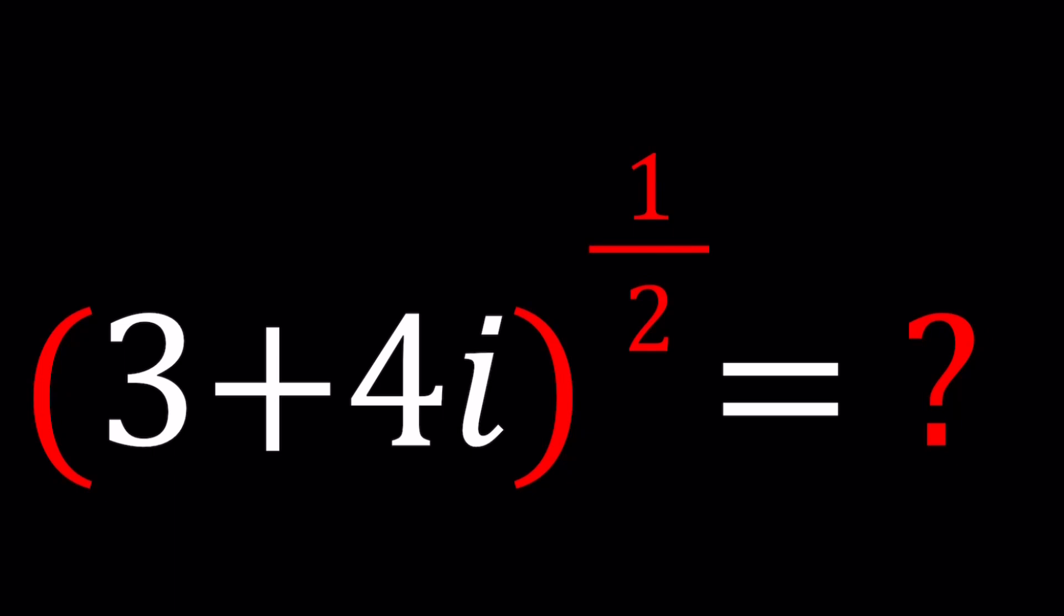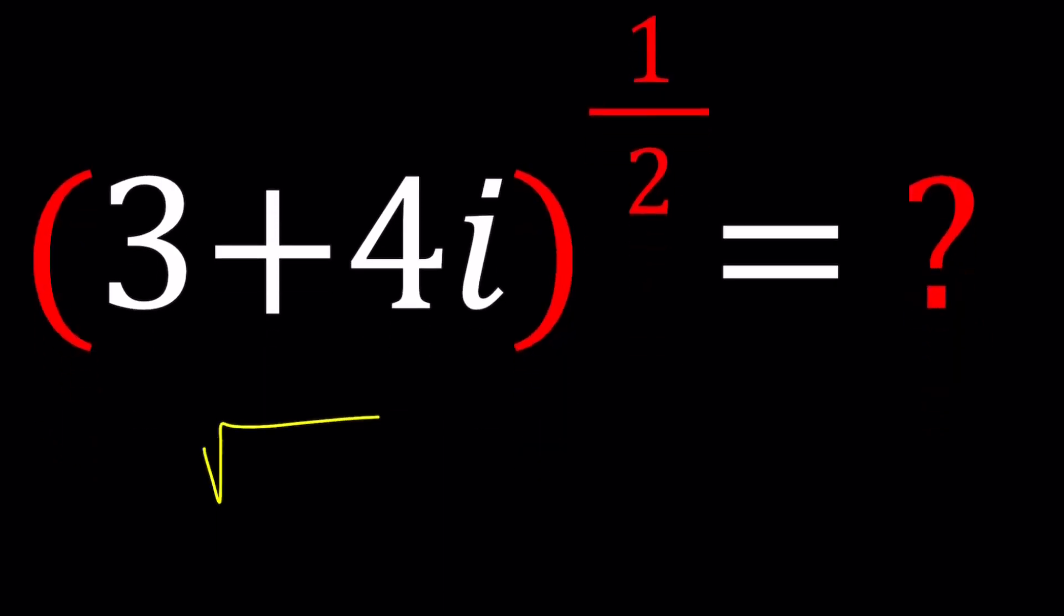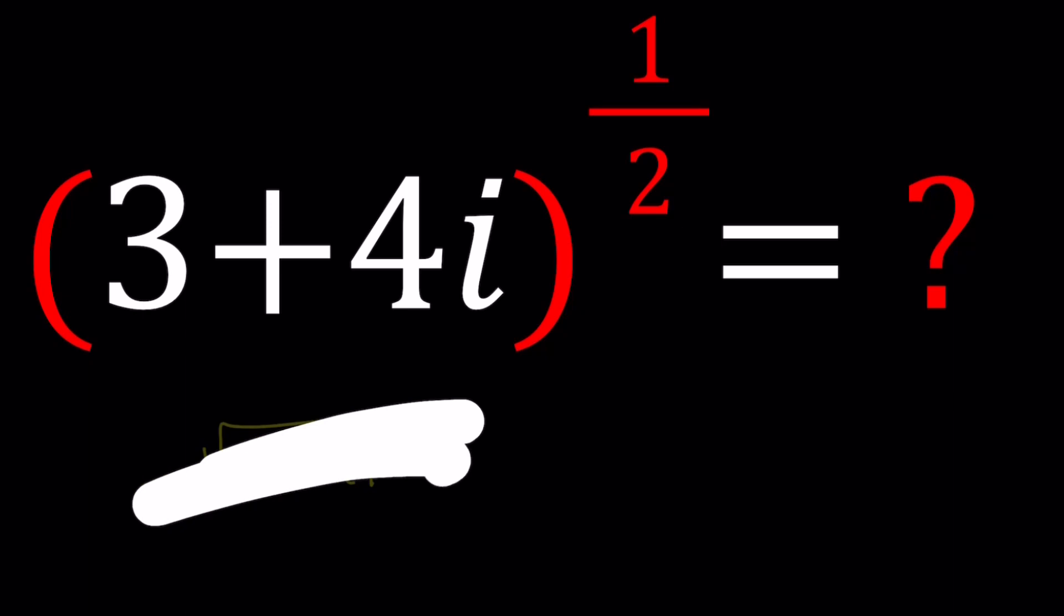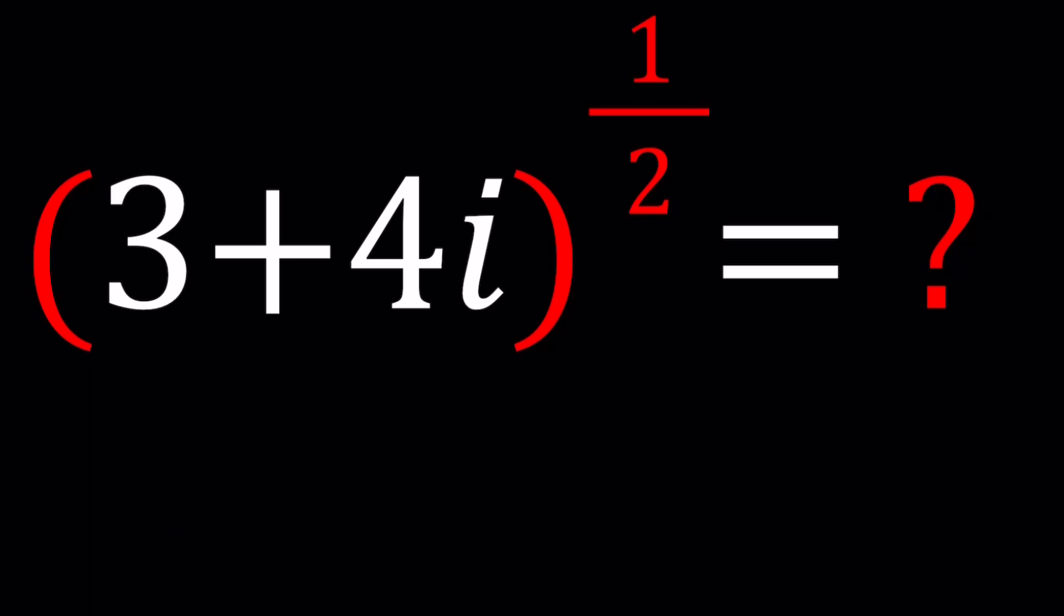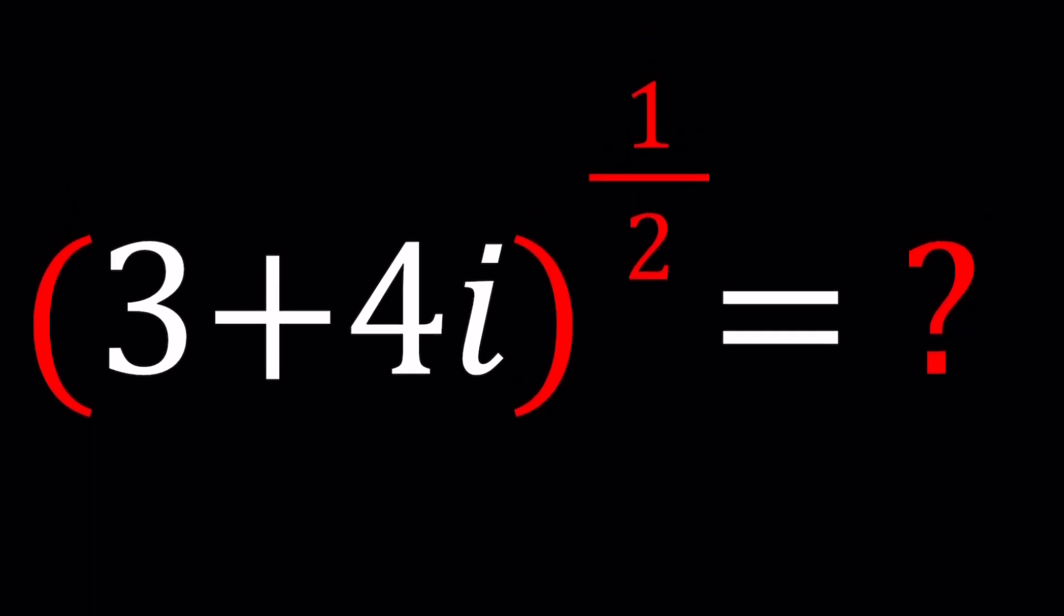So we have a number 3 plus 4i written in standard form and we're going to find the square roots. That's why I did not use the real square root sign where we can kind of write it like this because this would be more appropriate for real numbers. But sometimes abuse of notation, we just use it. I'm also guilty for that.